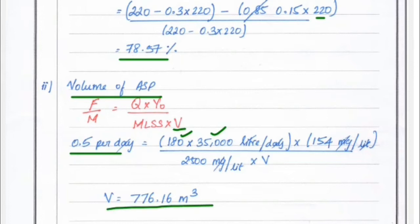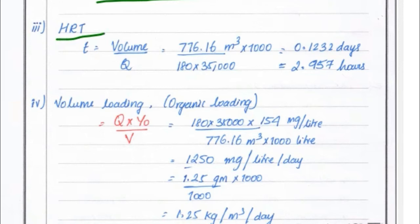Next, the hydraulic retention time HRT: T equals volume divided by Q, that is the formula. Volume equals 776.16 times 1000 divided by Q, which is 180 times 35,000 because 180 is the sewage per head times population 35,000. We got the value of 2.95 hours, that is 0.1232 days.